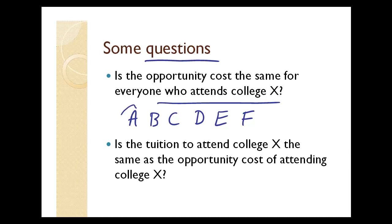For example, let's say person A is 19 years old and person F is 19 years old. Person A has been acting and could currently, if she wants to, be in a movie and be paid three million dollars for that movie. So if she chooses now to attend college instead of being in the movie, she forfeits three million dollars.